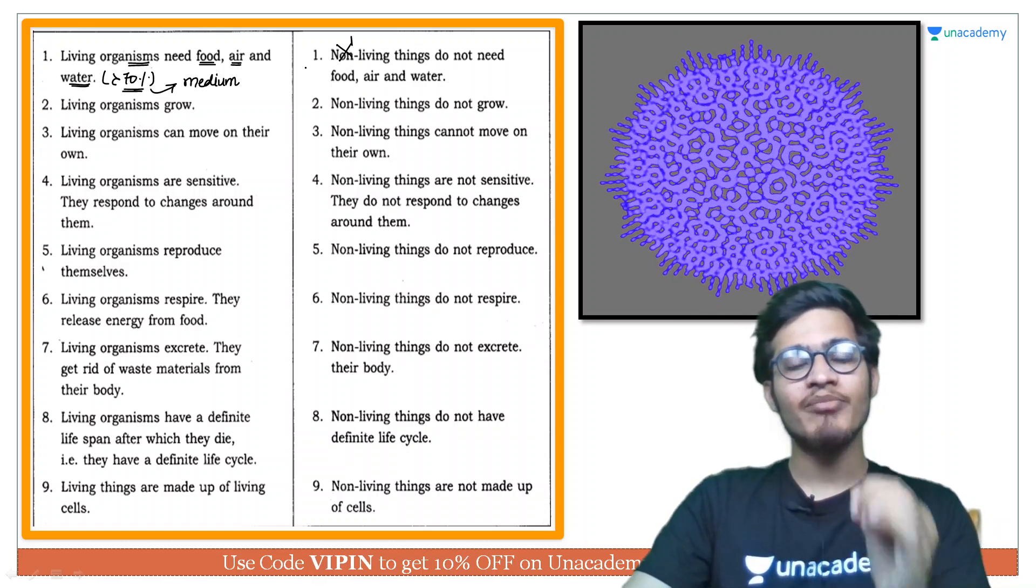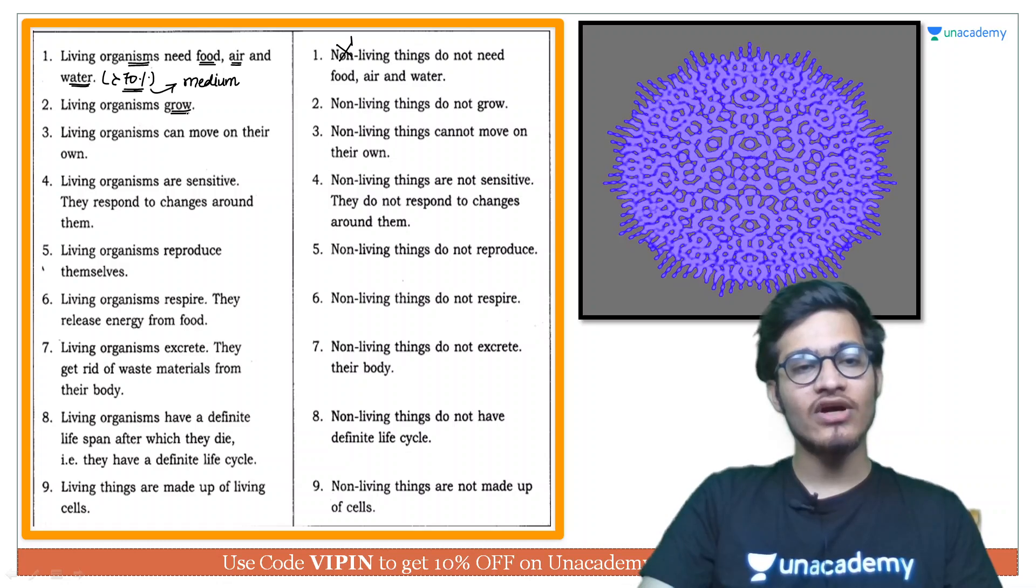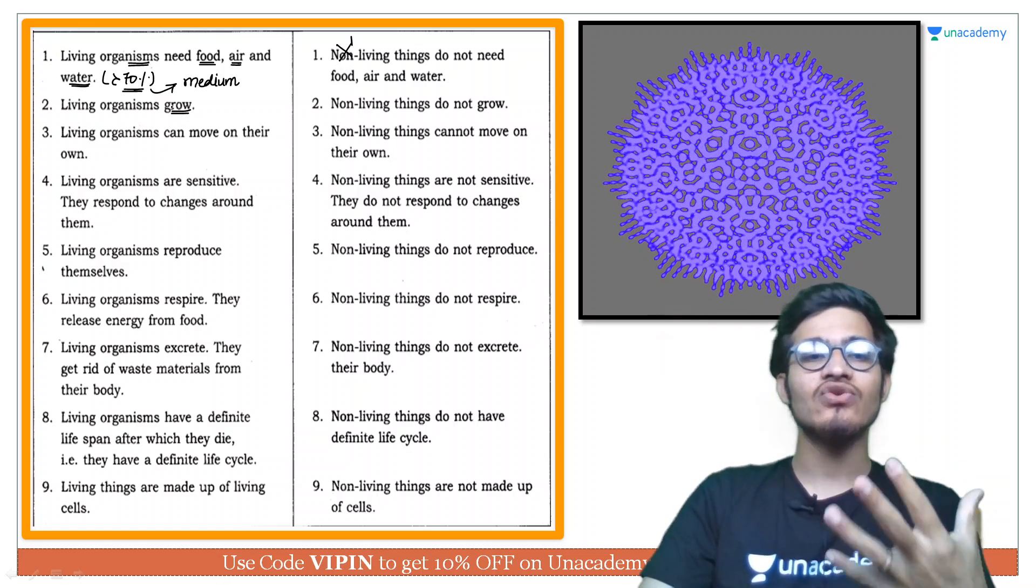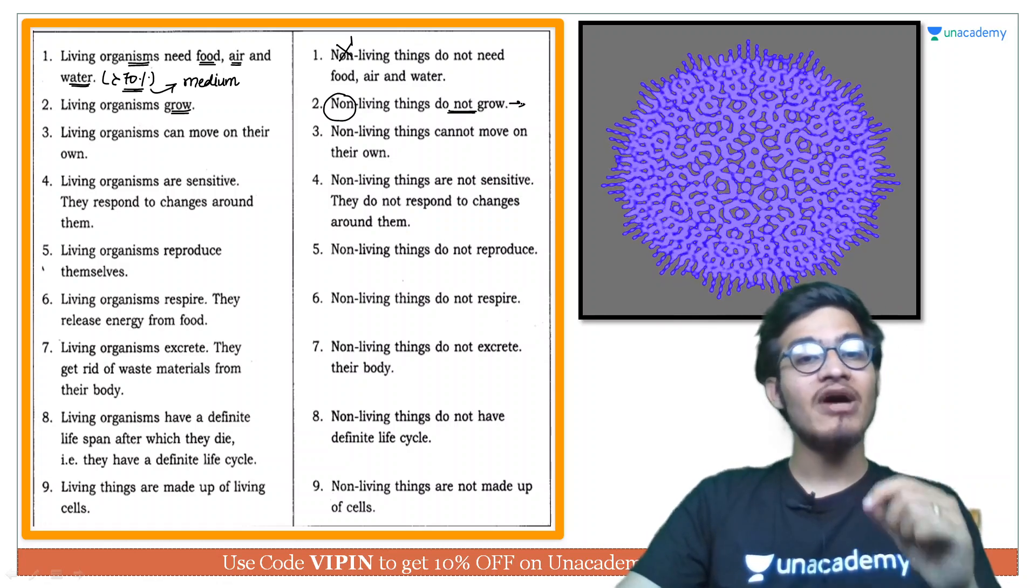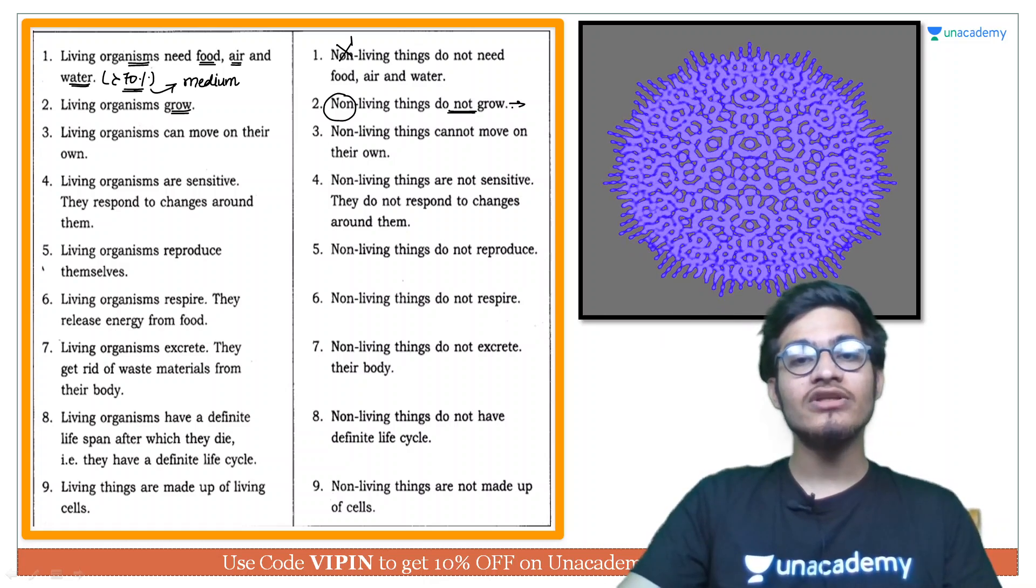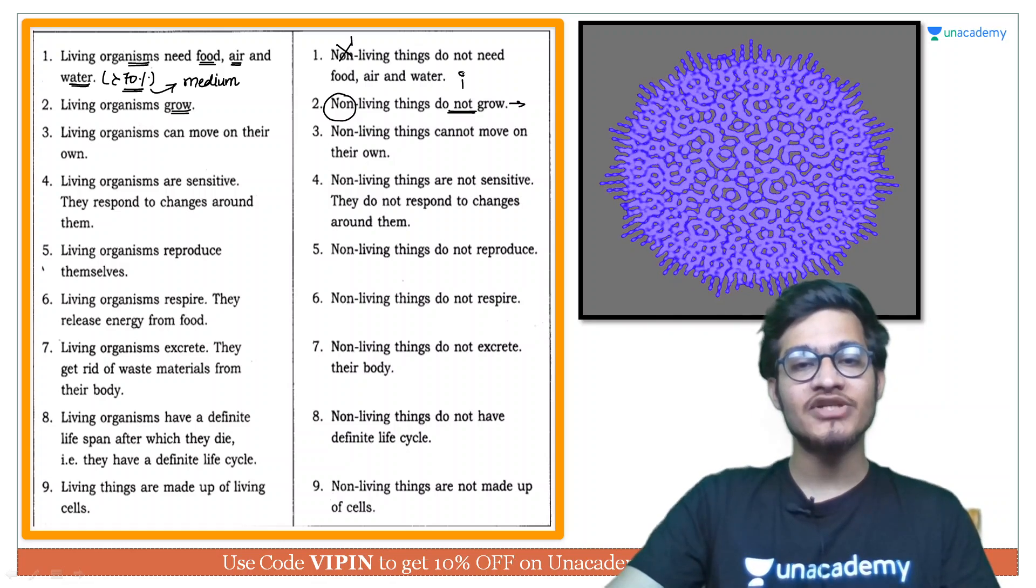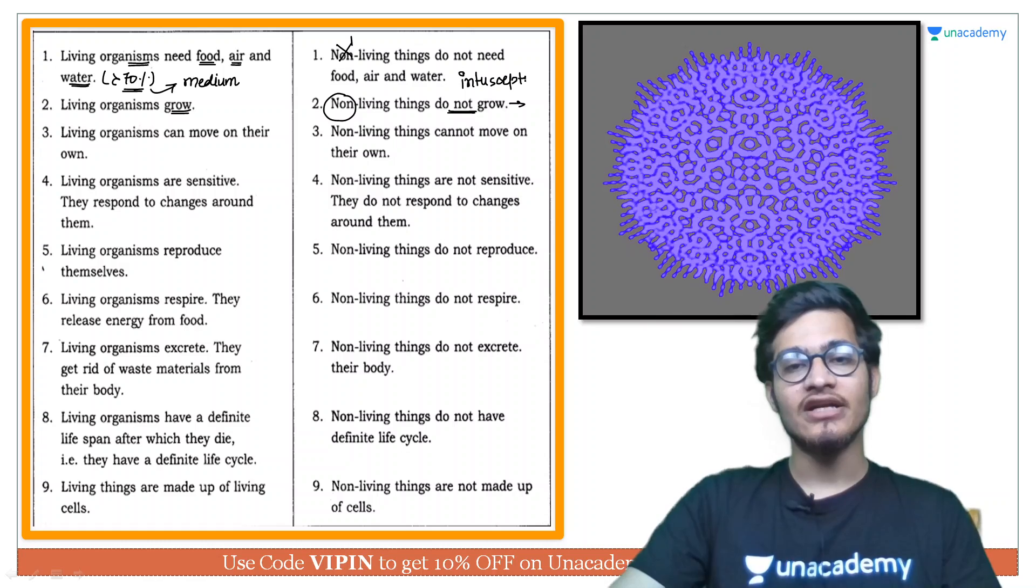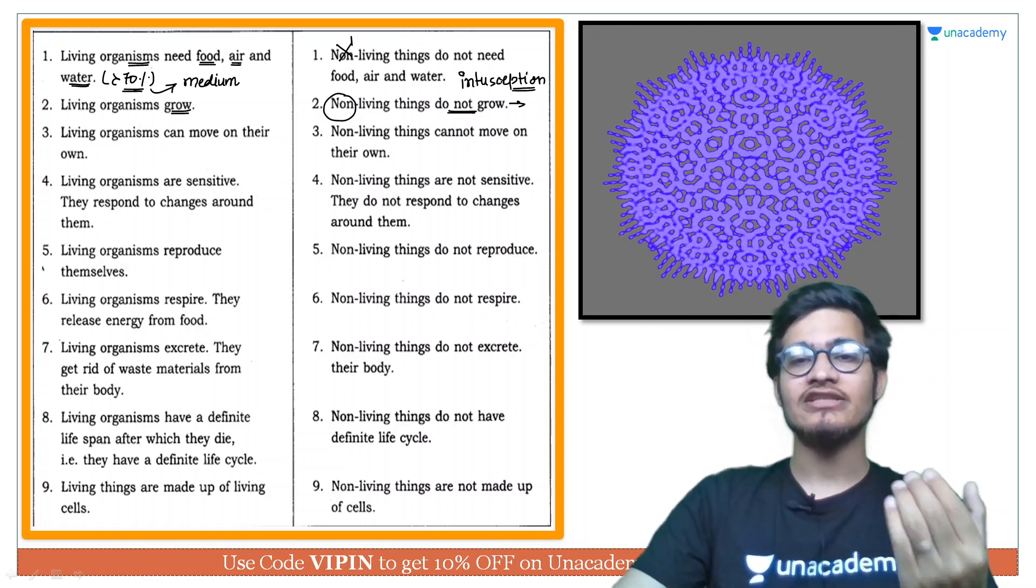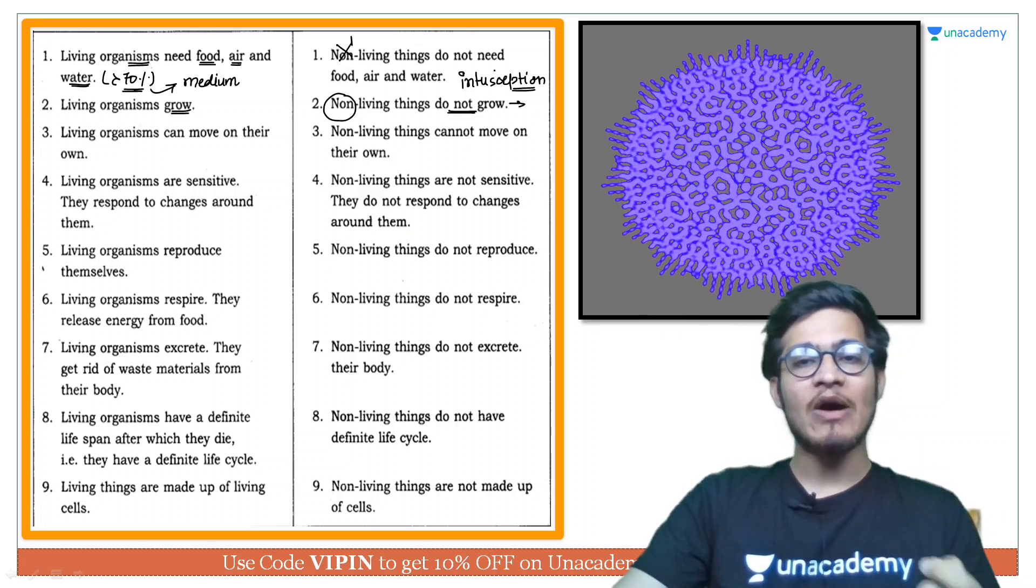Living organisms grow karti hain jaise ki hum bachche the aur ab hum bade ho gaye hain, so we used to grow but non-living things does not grow internally. Ab ye ek aisa fact hai jo hume agli lecture mein dekhenge ki growth internally or externally kaise hoti hai. Internal growth is called as intussusception jabki external growth ko kaha jata hai accretion. So jab aap accretion show karenge yani ki jab koi non-living thing accretion show karengi jaise ki pahar koi snow mountain to uski length overall badhti hai so wo bhi grow kar sakti hai but by accretion not by intussusception.